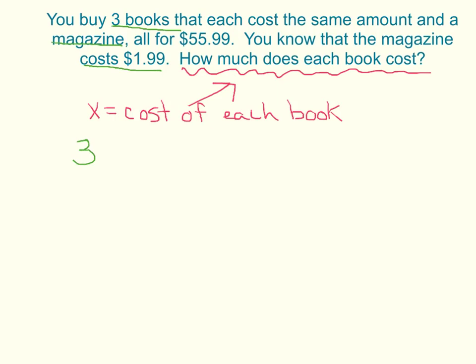One keyword that helps is looking for each. That often represents a variable. Because they're saying three books that each cost the same. So if I have three books, I want to multiply by however much each book costs. And then I'm adding how much the magazine costs, which is $1.99. So three books plus one magazine is equal to how much I paid total, $55.99.